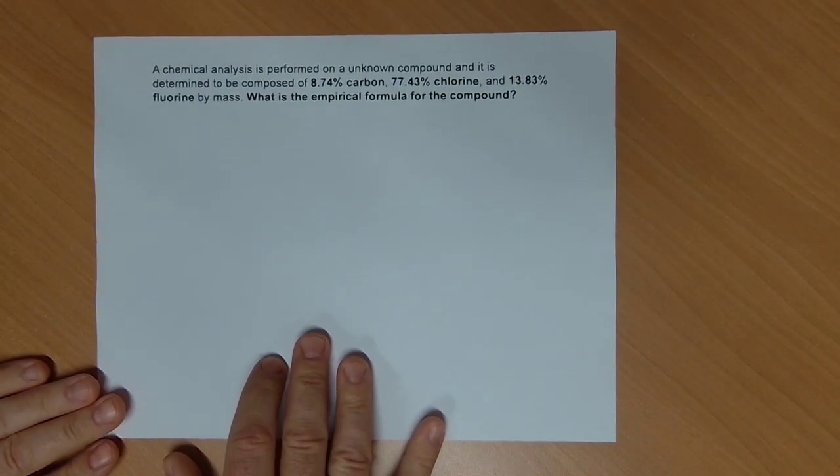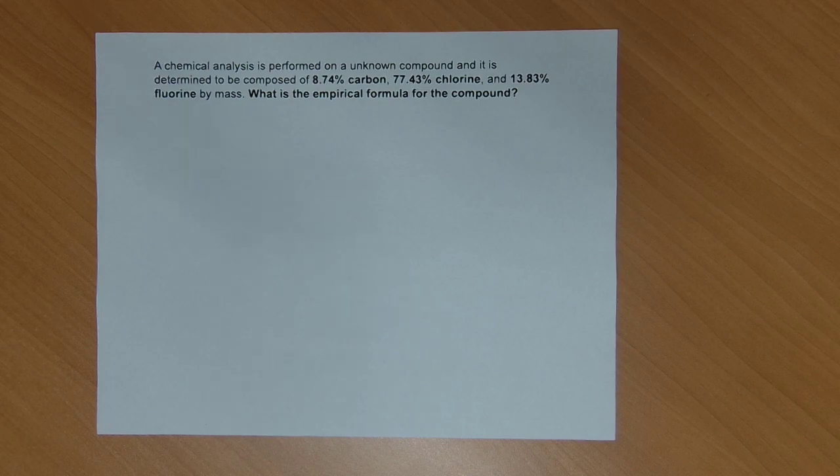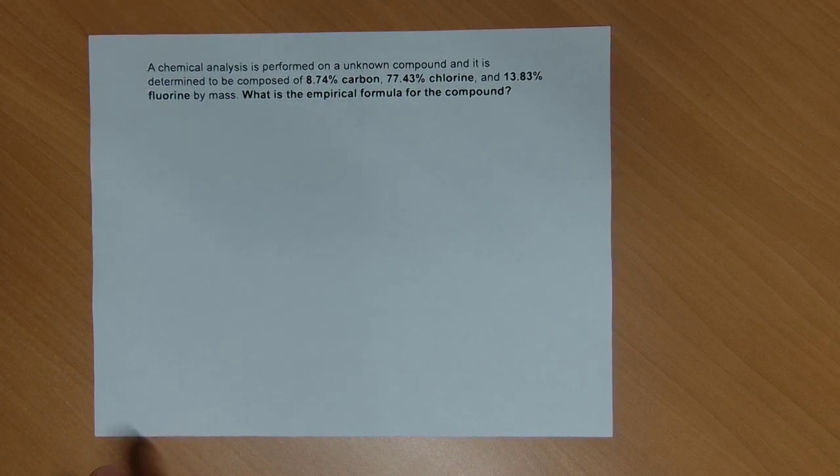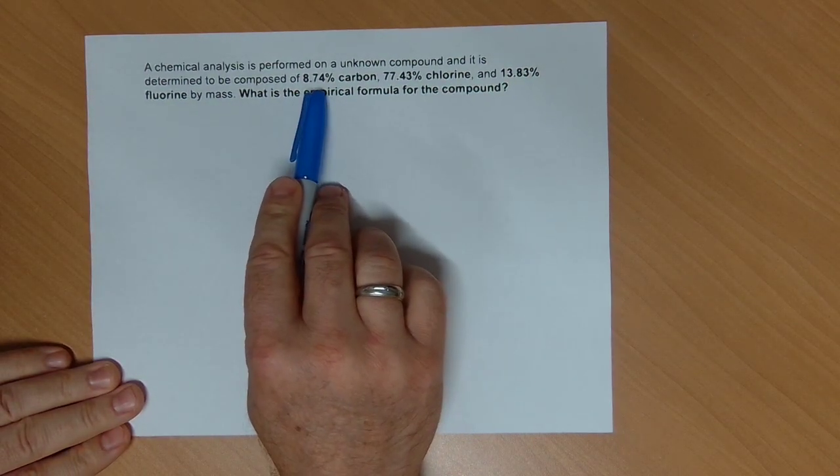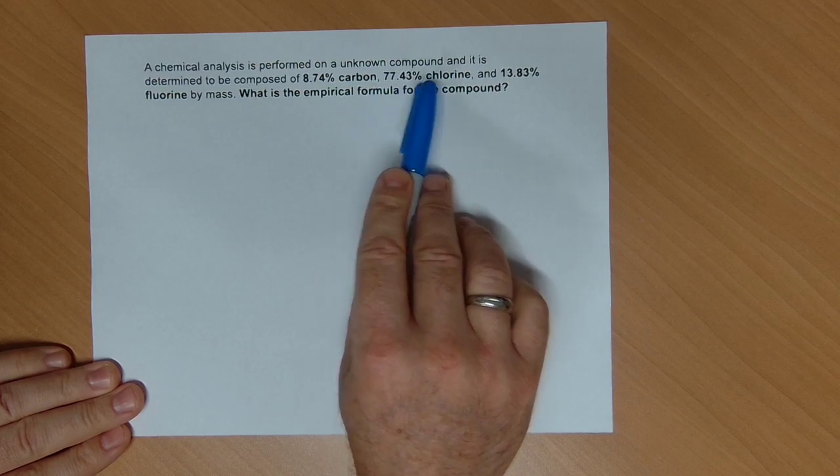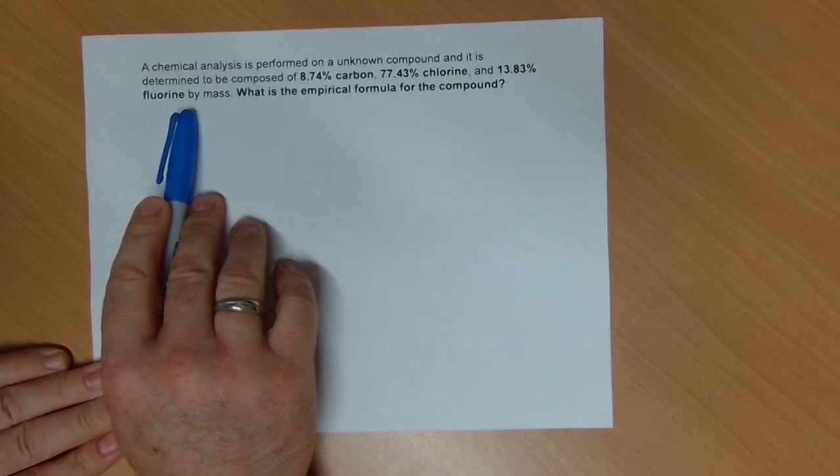The process of doing that conversion is kind of a standard type of problem that you'll see. And so here's a sample problem. You can take a moment to read it. Pause if you need to. But in this problem, we're going to say that we have some knowledge that I have a compound that's 8.74% carbon, this percent chlorine, and this percent fluorine by mass.